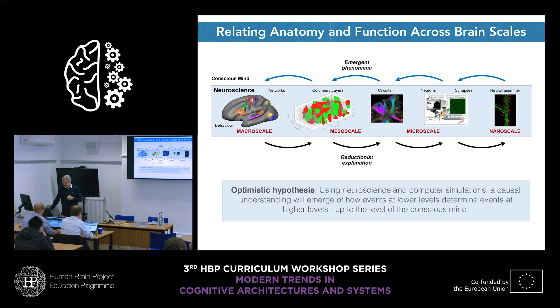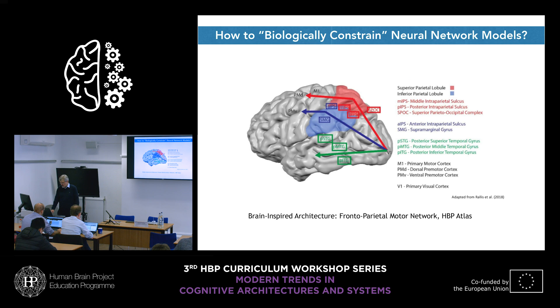I call this the optimistic hypothesis — that neuroscience and computer simulations can reach a causal understanding of how more complex phenomena at a higher level of brain organization can be explained by mechanisms at lower levels. This sounds cool, but in practice it is very, very challenging. If that were easy, we wouldn't need such a big project like the Human Brain Project. But of course we make progress — you learn by doing. If you jump in and try it, you realize what is possible and what is not.